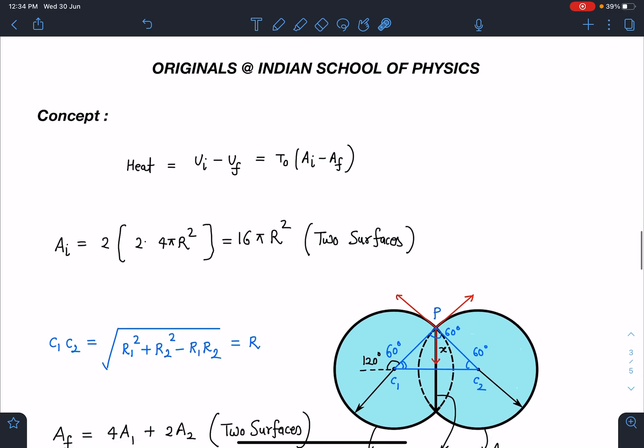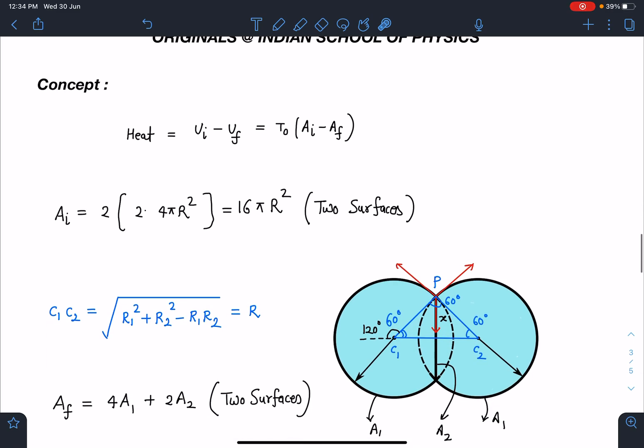So let's discuss the concept part of this problem. Concept-wise it's very straightforward: heat released is nothing but change in surface energy. So initial surface energy if we calculate, and final we calculate, the difference of these two is going to give us the answer. So T₀ times (A_initial - A_final).